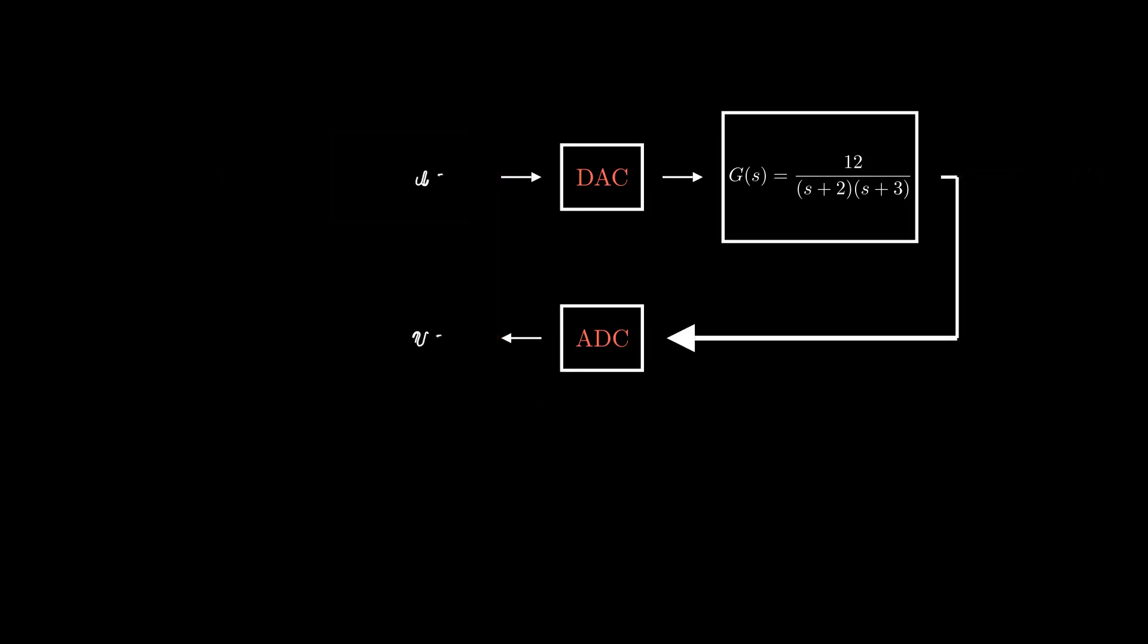Let's say the signal given out by the digital computer is u_d(t), and the signal coming into the digital computer is y_d(t), both of which are digital signals.